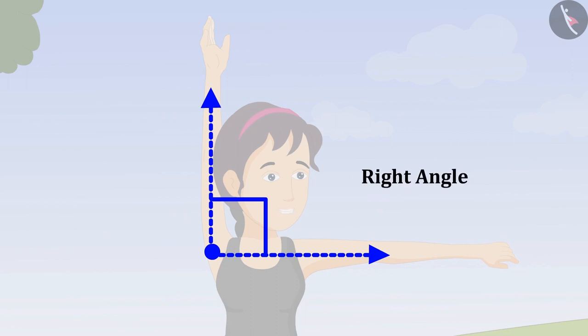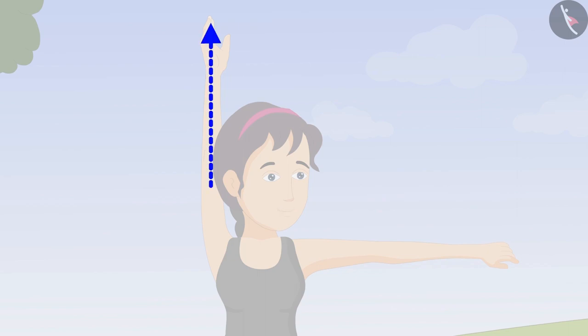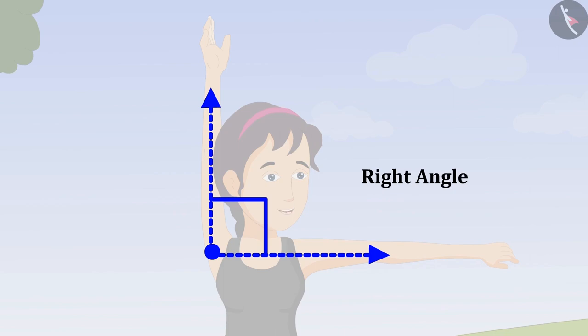This is called a right angle. When a vertical line joins a horizontal line, a right angle is formed between them. Got it, Riva?